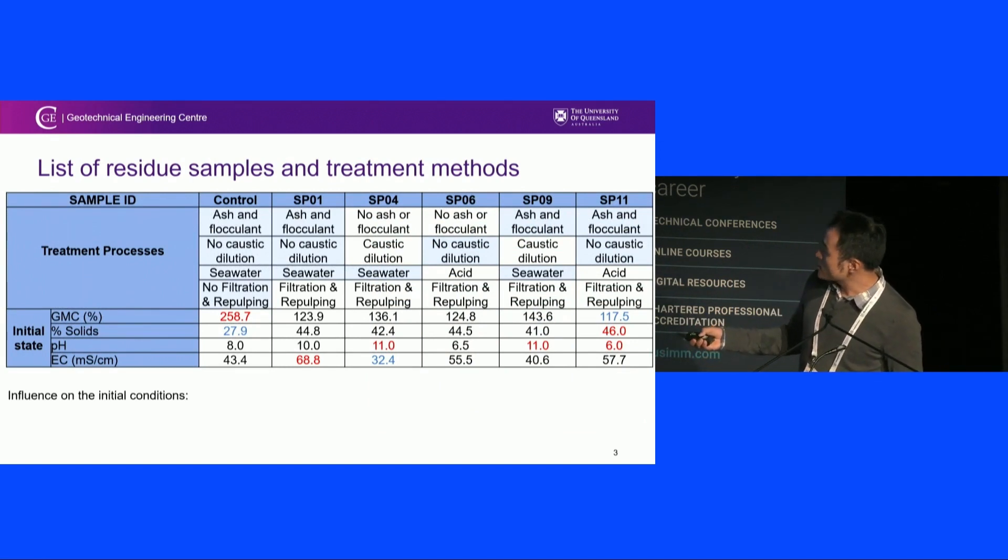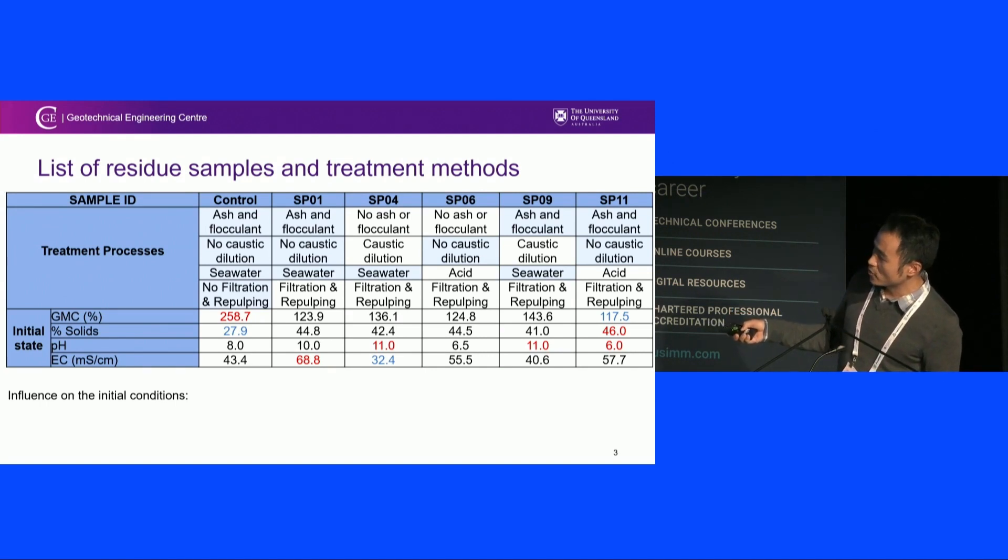The next slide is basically a list of the samples. We've got the control samples here. It was subjected to ash flocculant, no caustic, seawater neutralization, and no filtration and repalping. Whereas the rest of the samples here is basically the combination of different methods. The method hatched in blue means that it's the same as the control sample. Where it's white, that means it's different.